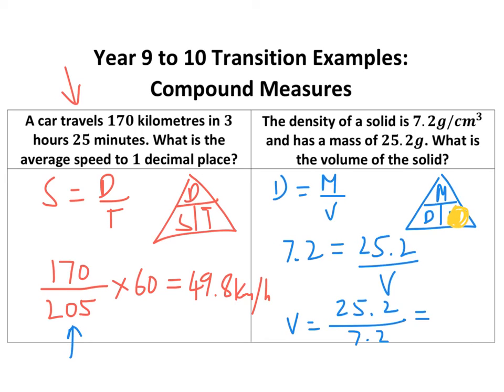Stick that in your calculator. It's not always a nice number, but there you go, 3.5 centimeters cubed. There are two formulas you really need to know and remember: the speed one and the density one. Once you've got that, it's pretty straightforward. There are a couple of other compound measures that sometimes come up, but these are the most common.